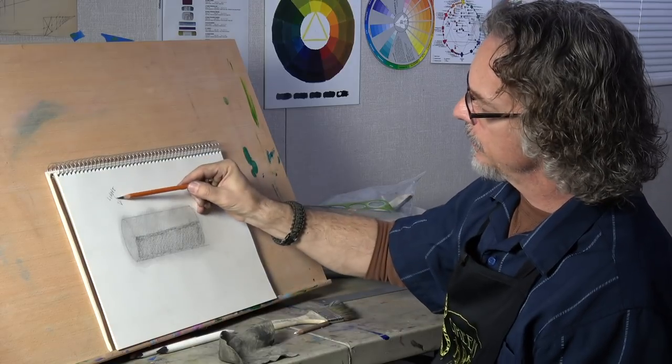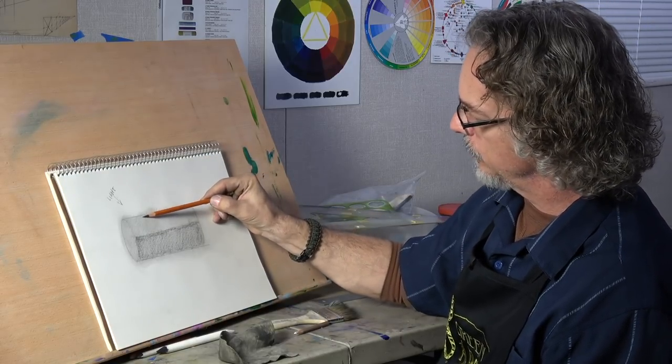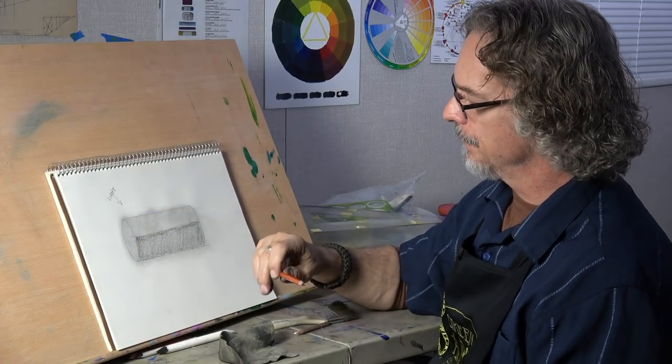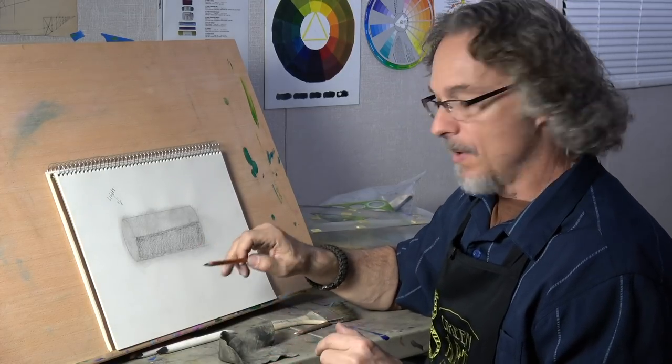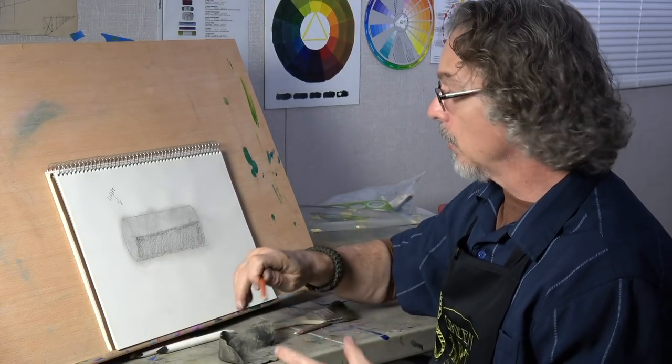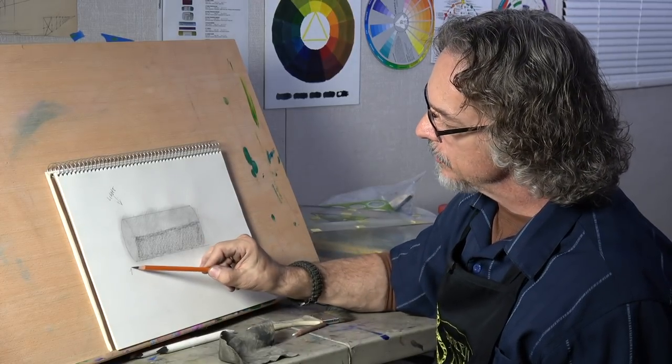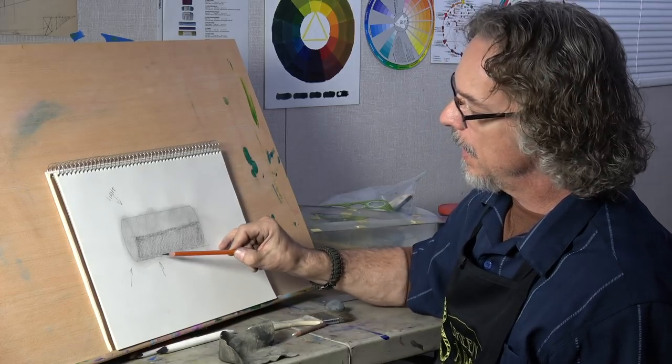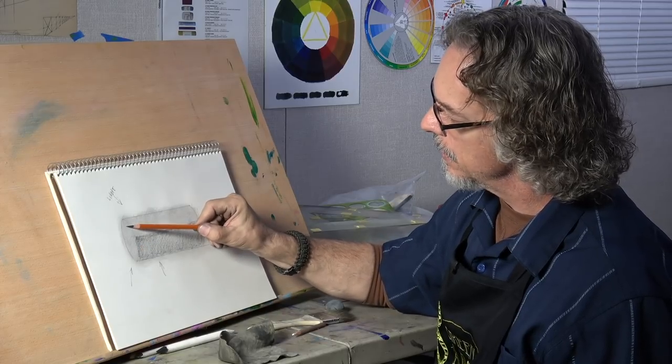All right. So we have our light source coming this way. We'll have our highlight here. We have halftones right in here and halftones at the top of that. But this right here gets a little tricky. If we think about that ambient light and that bouncing light from the table or whatever this cylinder is sitting on, that light is going to be bouncing from here, correct? And here. Onto this surface and onto this surface.